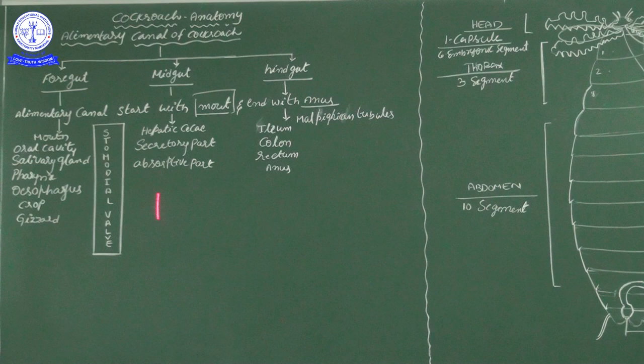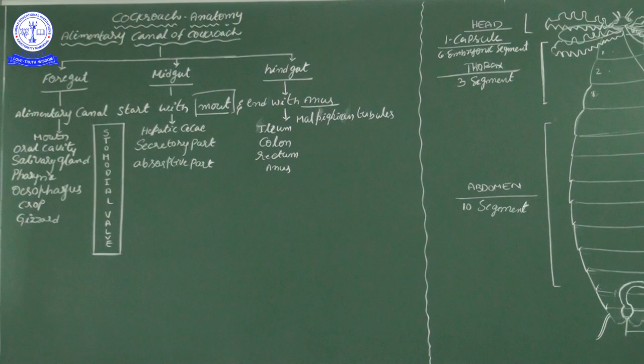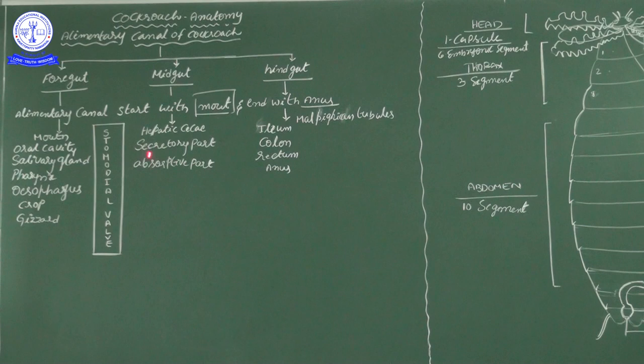The cockroach alimentary canal is similar to our alimentary system but has different structures, because cockroach belongs to invertebrates while human beings are chordates — highly advanced organisms in evolution. This cockroach, a primitive organism belonging to Arthropoda, has special significant structures in its alimentary canal.